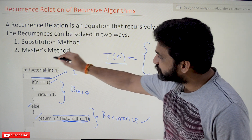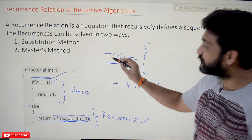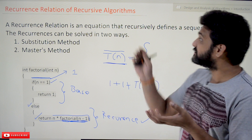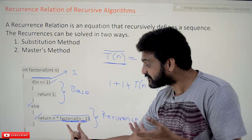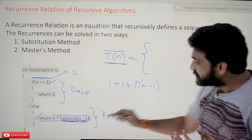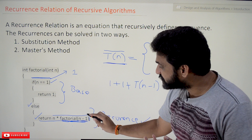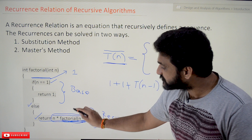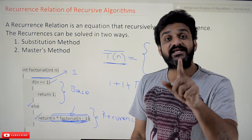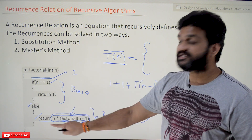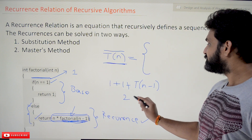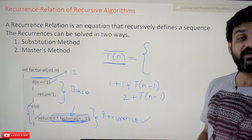The amount of time taken by this function call is T(n-1). So the total amount of time taken by the recurrence part of the program is T(n-1) + 2. One part of the recurrence function is therefore: T(n) = T(n-1) + 2, if n is greater than 1.